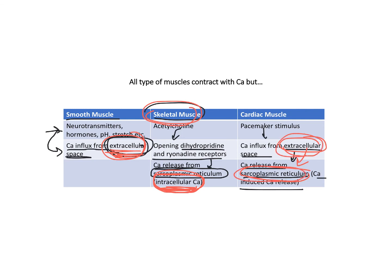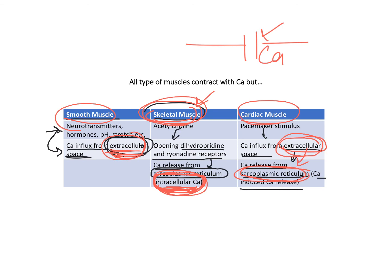This is really important for distinguishing smooth, skeletal, and cardiac muscle types when answering questions. This is also the logic behind why calcium channel blockers — like dihydropyridine and non-dihydropyridine calcium channel blockers — do not block contraction in skeletal muscles. Because skeletal muscles use intracellular calcium, blocking membrane calcium channels has no effect on them. But in smooth muscle and cardiac muscle, calcium channel blockers can have an effect because both use extracellular calcium.